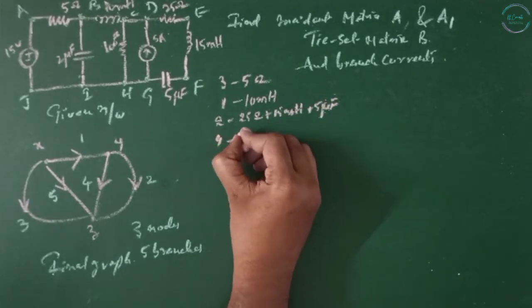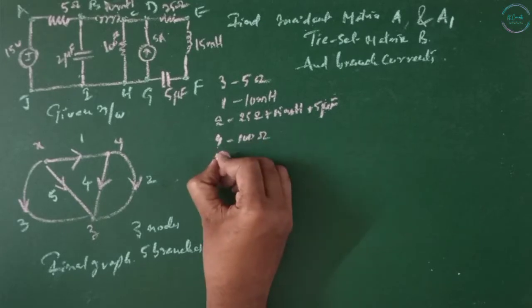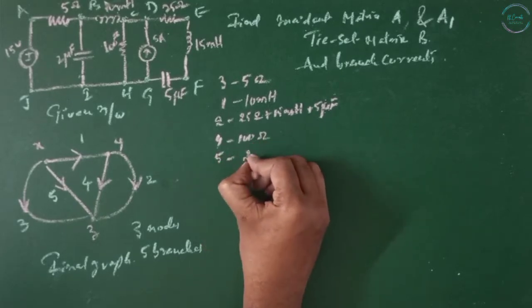And branch 4 is 100 ohms. Branch 5 is 2 microfarads.